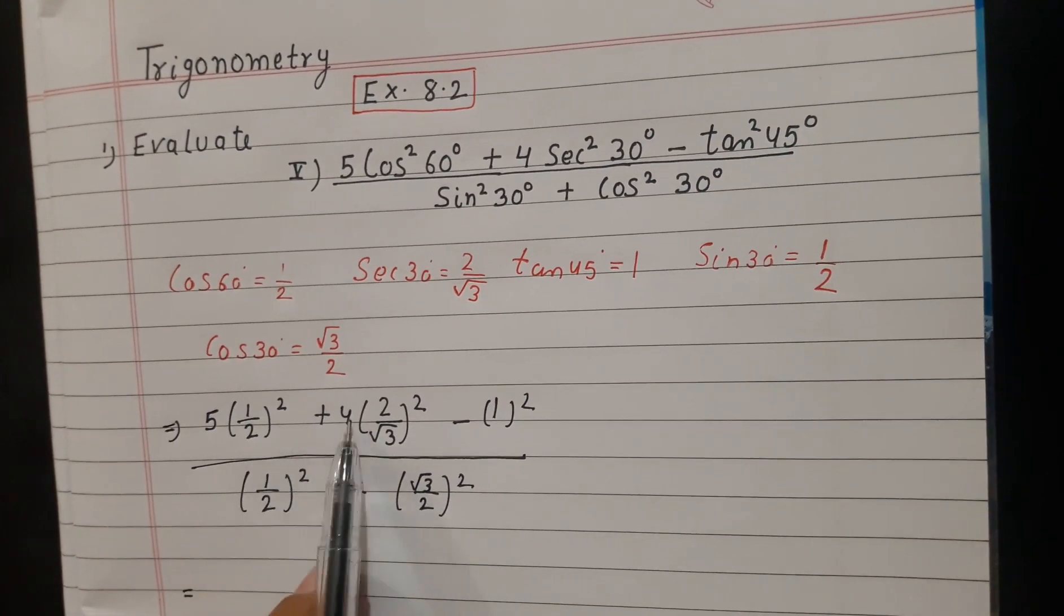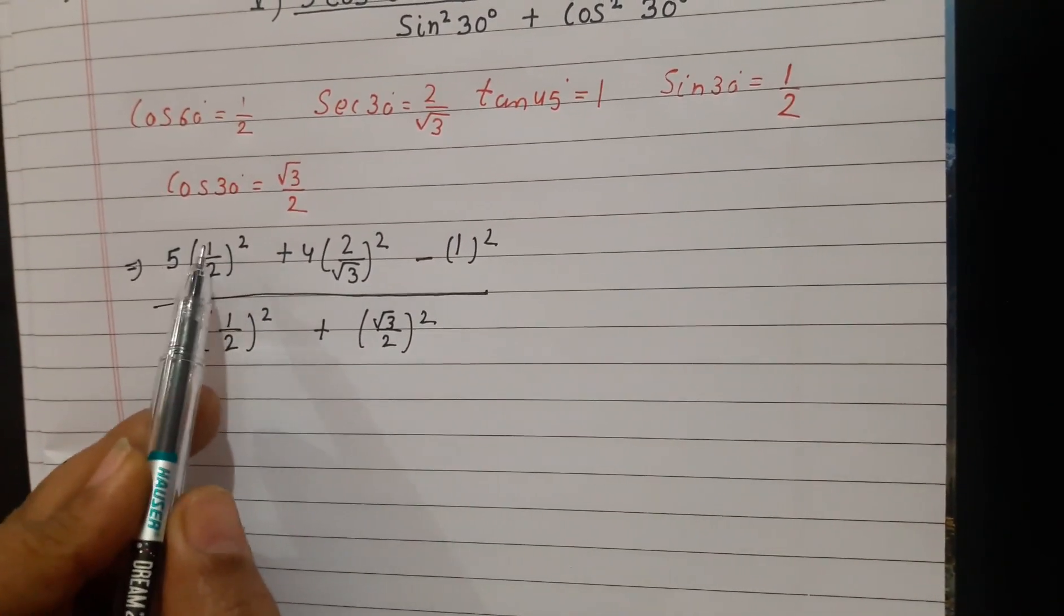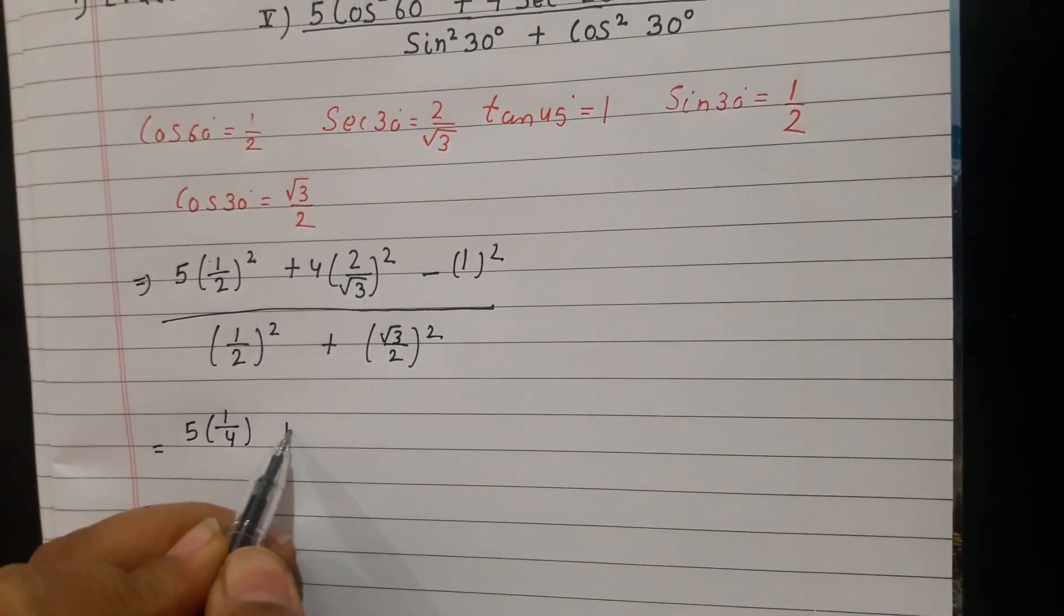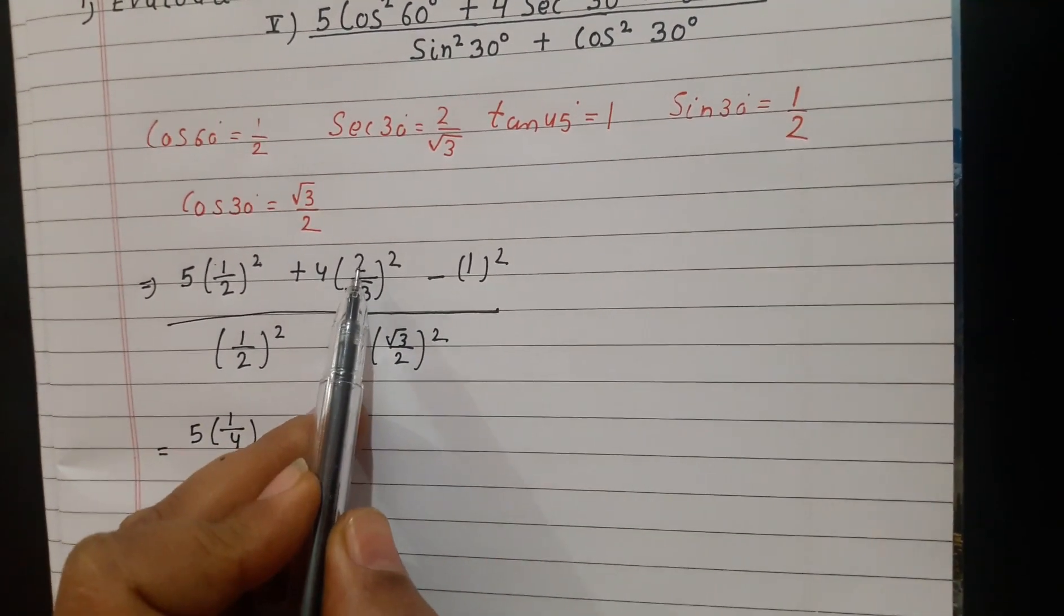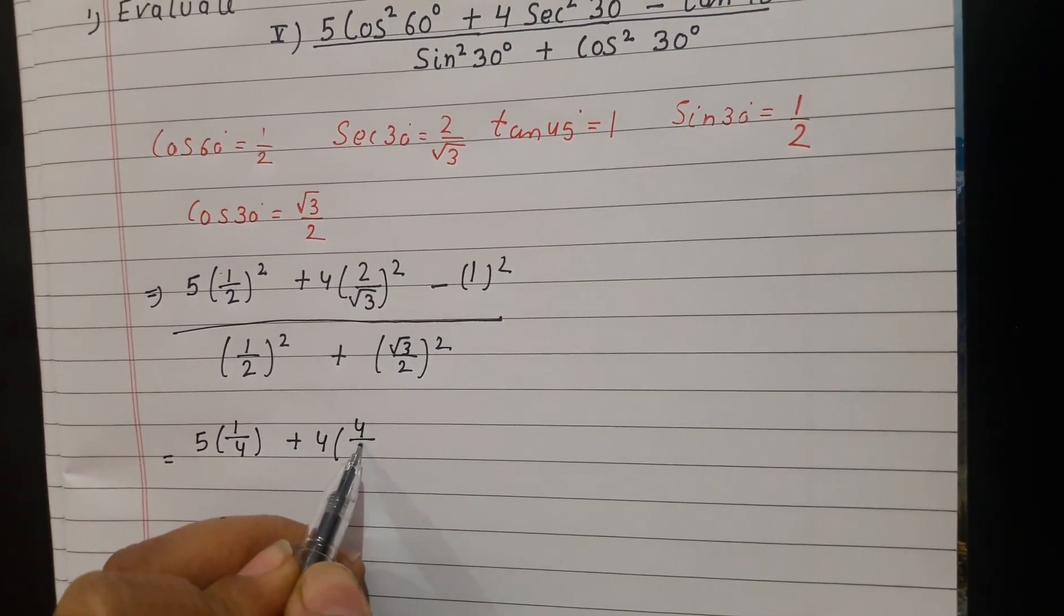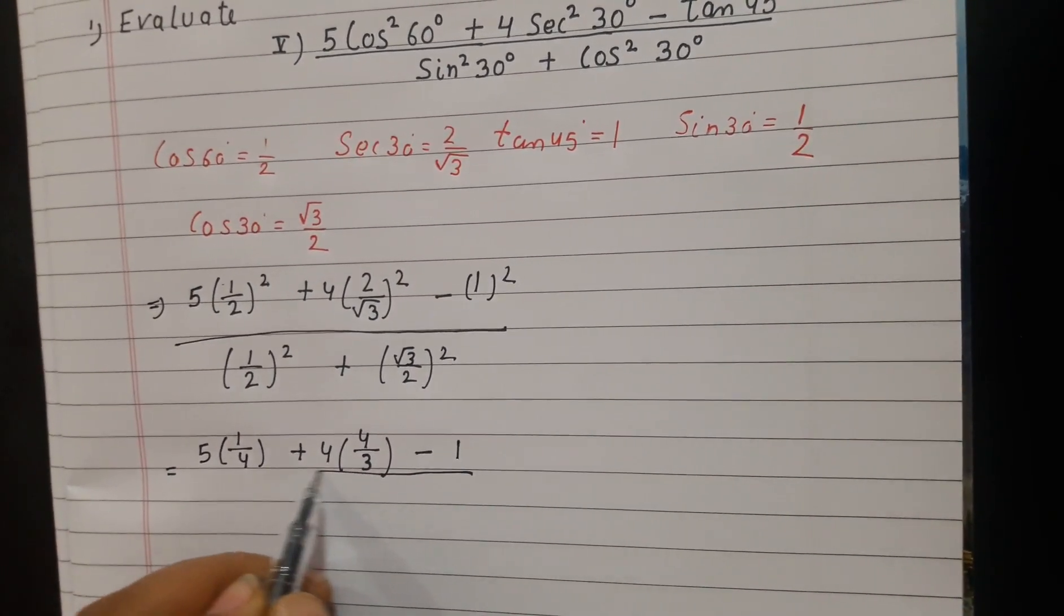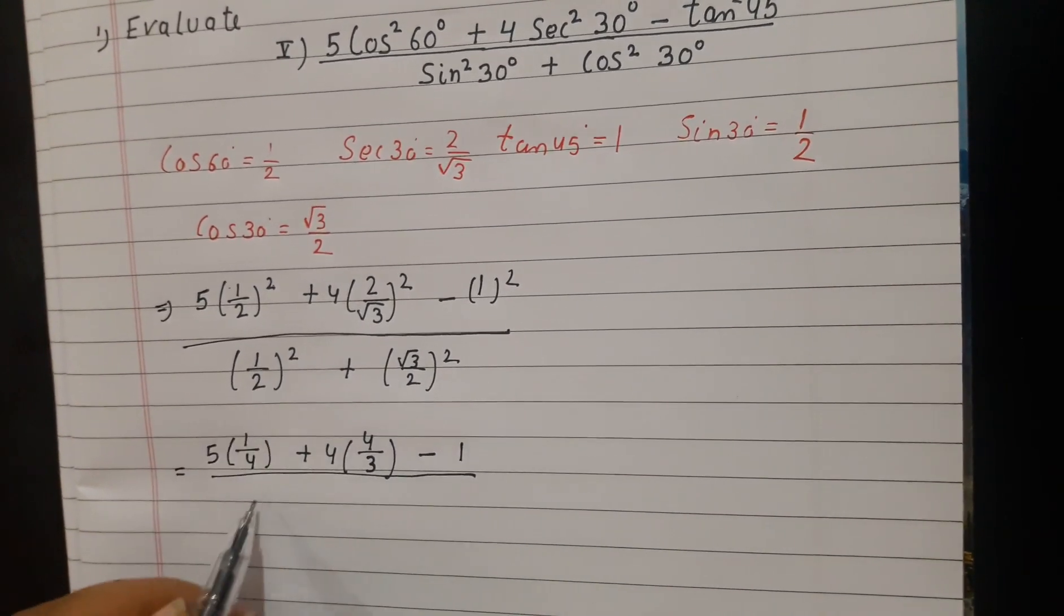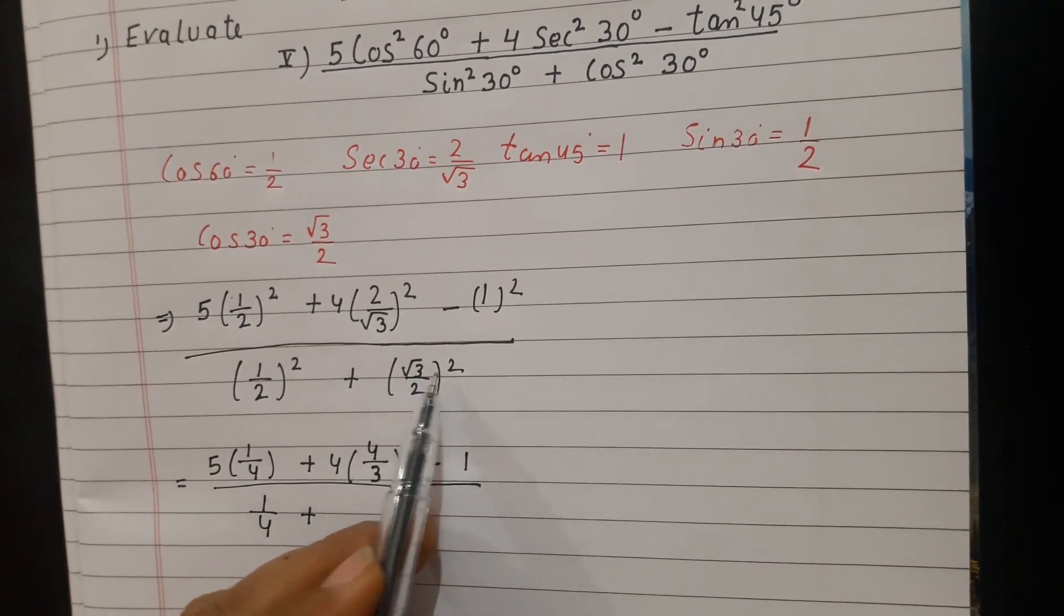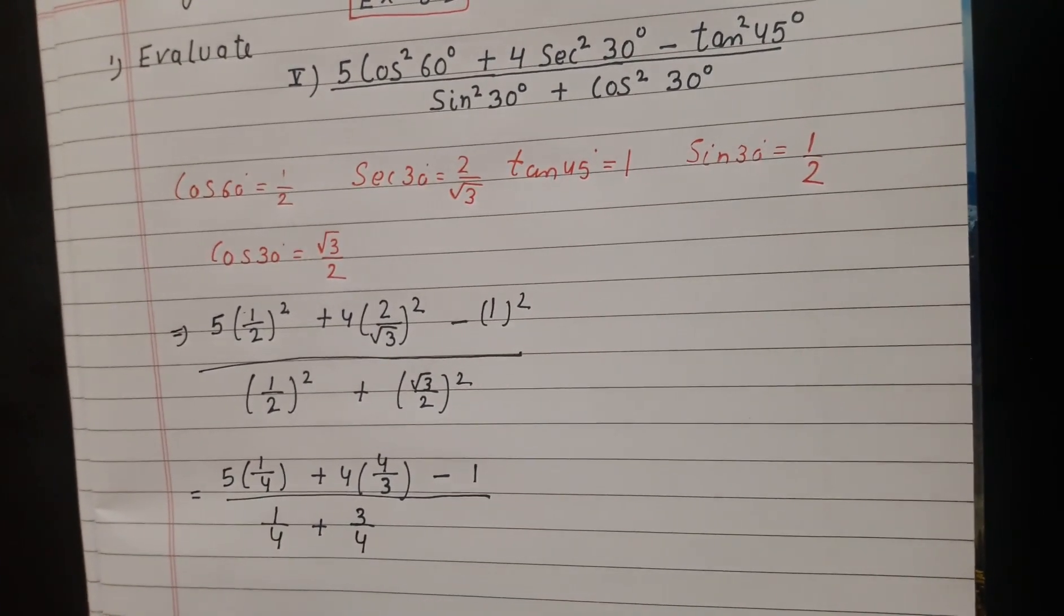We have to square each term. Squaring 5, 1² is 1, 2² is 4. Plus 4, numerator 2, 2² is 4, root 3 square is 3. Minus 1² is 1. Again whole divided by 1² is 1, denominator 2, 2² is 4. Plus root 3 square is 3, 2² is 4.